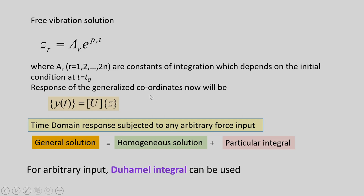The response of the physical coordinate is found as Y(t) = U·Z. Once the generalized coordinates Z are found from the decoupled equations, the physical response Y(t) is simply the multiplication of the modal matrix U by the vector Z. This recovers the actual displacement and velocity of the physical system.